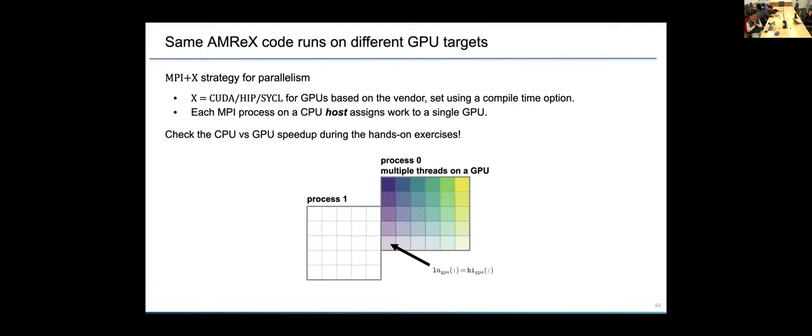Moving on to GPU parallelism from CPUs. Again, we have the MPI plus X strategy as Weiqun mentioned. Then X here is the CUDA, HIP or SYCL interface based on the vendor architecture. And this is using the compile time option, even for OpenMP, if you want to compile it, you have to enable that during the compile time. And here also for GPUs, we do this at compile time. You mentioned that you want to activate a specific backend for the GPU implementation. So each MPI process then assigns work to a single GPU and each GPU thread works on a single mesh cell.